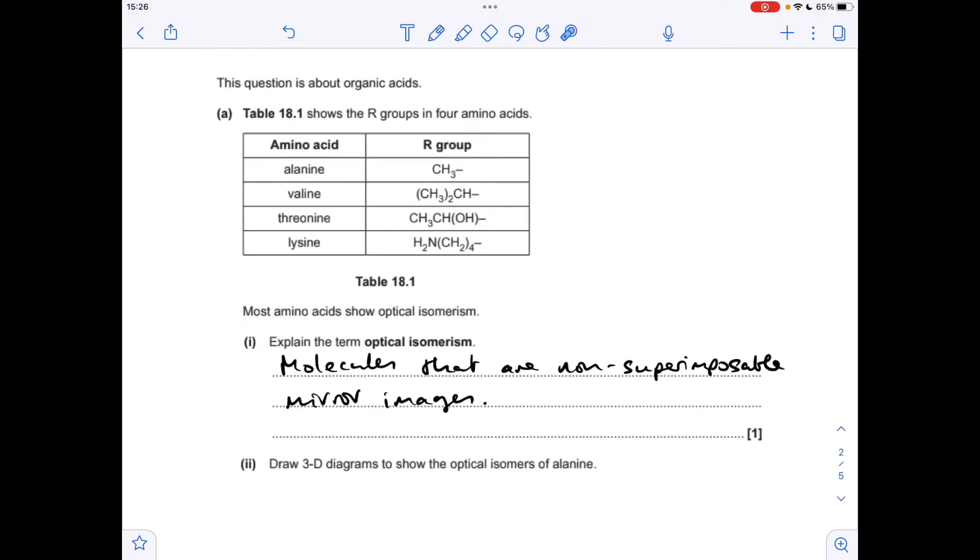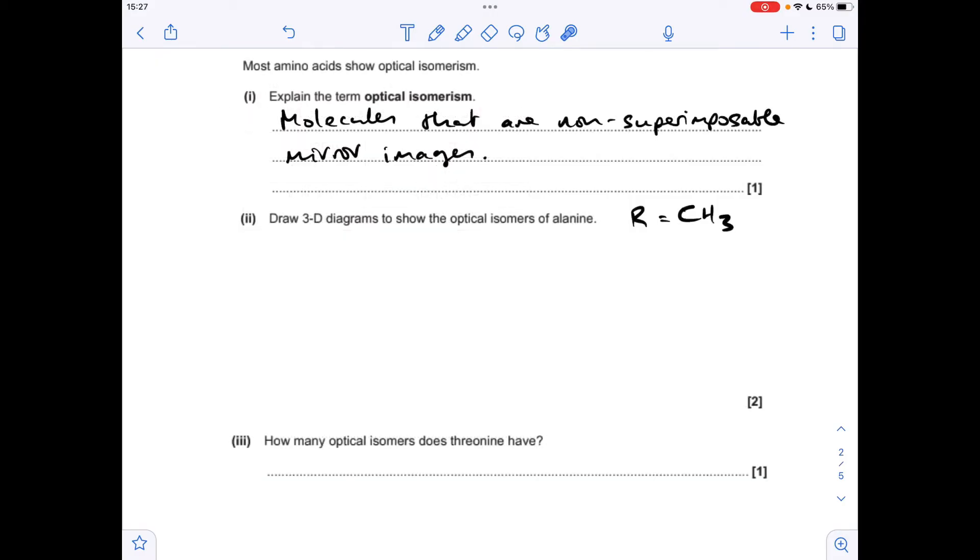Moving on to the regular questions now. So optical isomerism is when you have molecules that are non-superimposable mirror images.